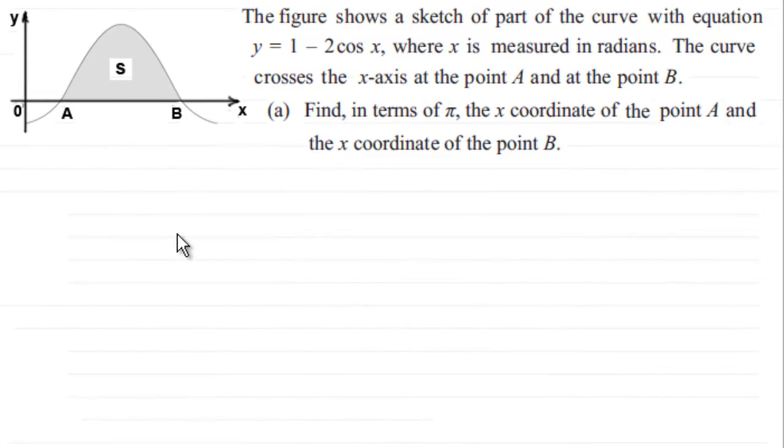Hi. Now in this question, we're given this figure which shows part of the curve with equation y equals 1 minus 2 cos x, where x is measured in radians.